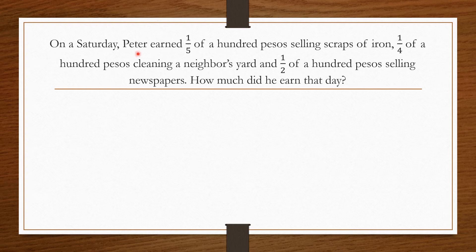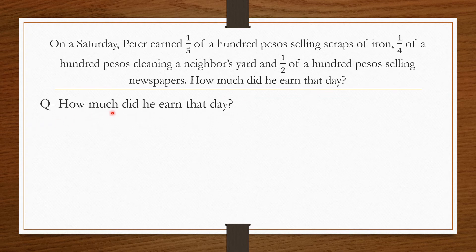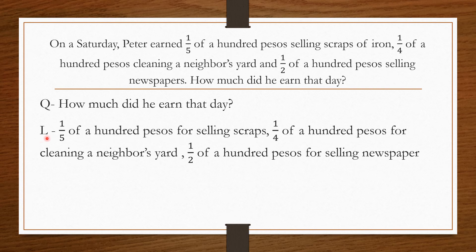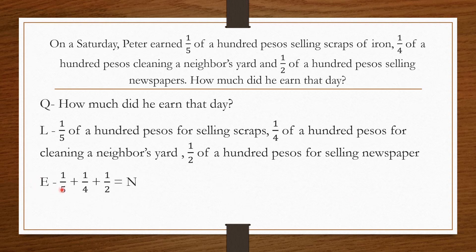Next problem. On a Saturday, Peter earned one-fifth of a hundred pesos selling scraps of iron, one-fourth of a hundred pesos cleaning a neighbor's yard, and one-half of a hundred pesos selling newspapers. How much did he earn that day? Question: how much did he earn that day? Listings of givens: one-fifth of a hundred pesos for selling scraps, one-fourth for cleaning a neighbor's yard, and one-half for selling newspapers. Equation: one-fifth plus one-fourth plus one-half equals N.